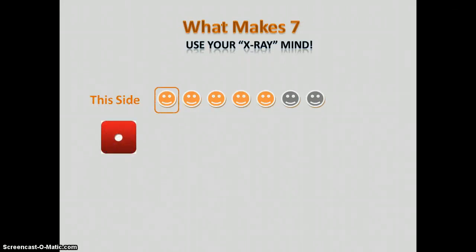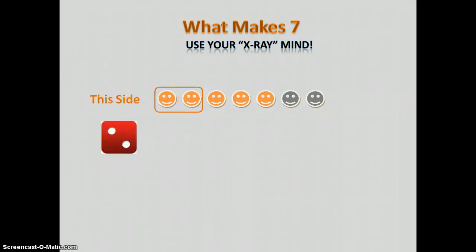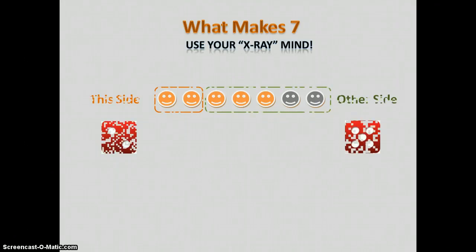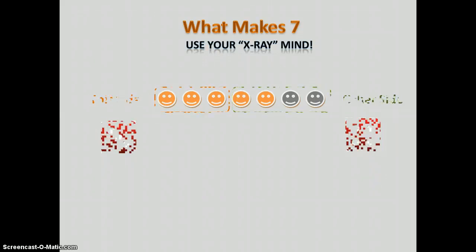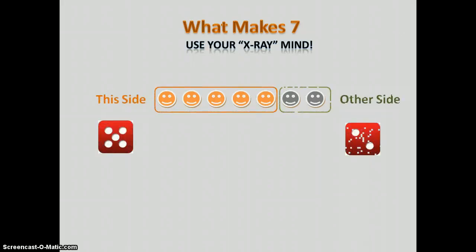And either practicing with a dice or thinking about the following, what makes seven? You do this. If this side is a one, guess what? The other side is a six. If this side is a two, the other side is a five. If this side is a three, the other side is a four. If this side is a four, the other side is a three. And you get the idea.